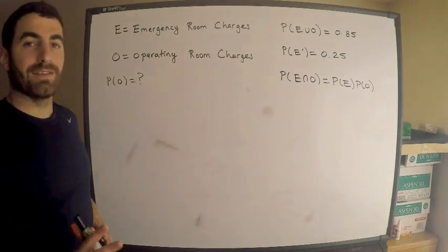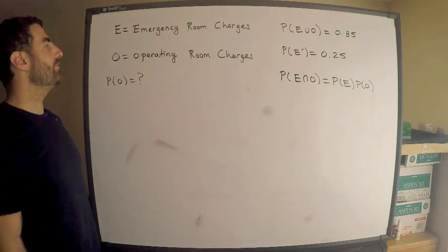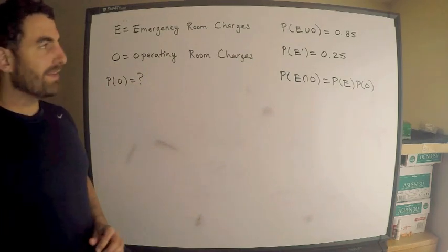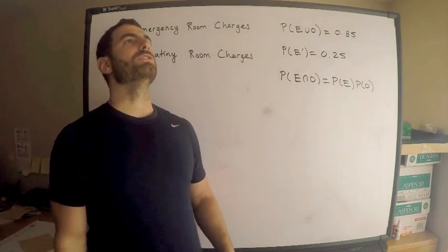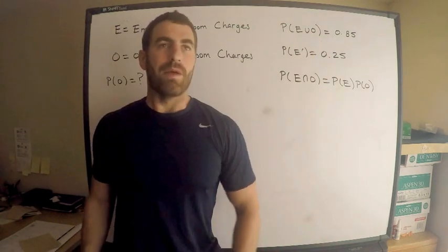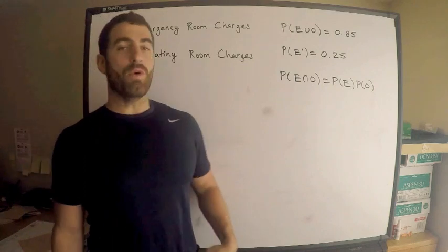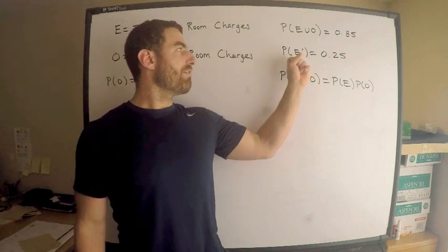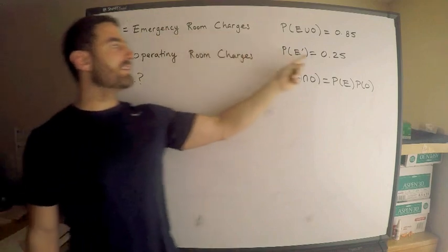I have two events — these are not random variables. I have an event E, which represents emergency room charges, and an event O, which represents operating room charges. We're given that the probability that someone gets either emergency room charges or operating room charges — so E OR O — is 0.85. We're also given that the probability of no emergency room charges — using the tick mark as the complement, so NOT E — is 0.25.